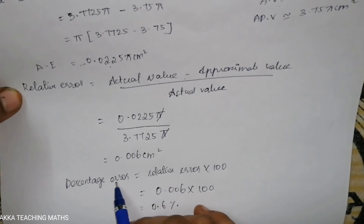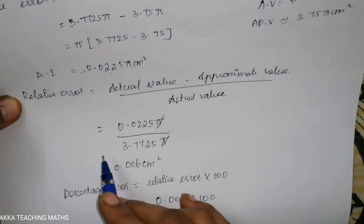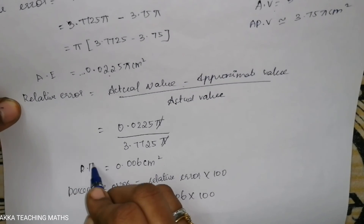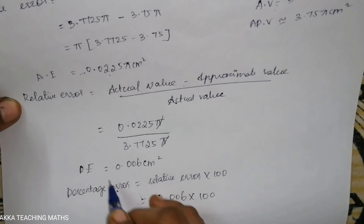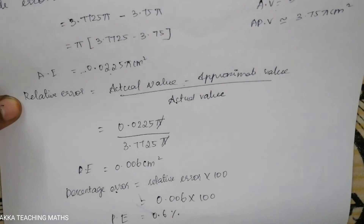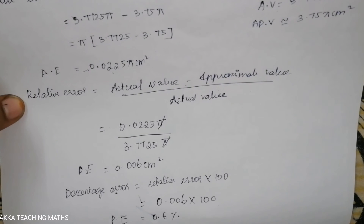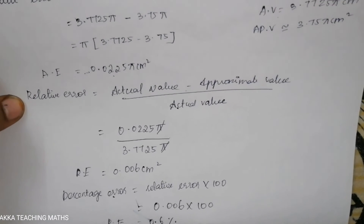This percentage error is in cm². This is the relative error and this is the percentage error. If you have any doubts, comment in the comment section. Thank you for watching.